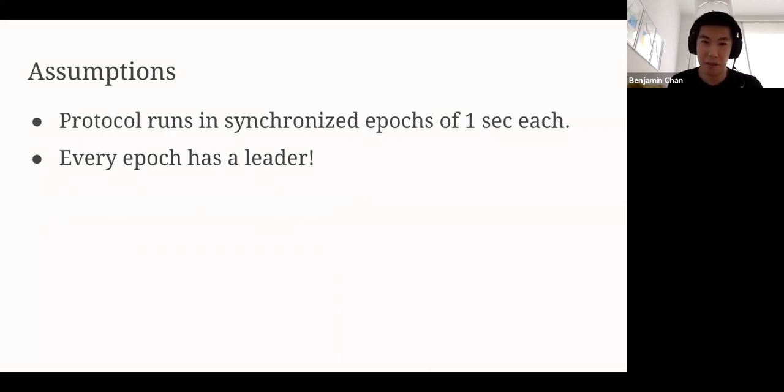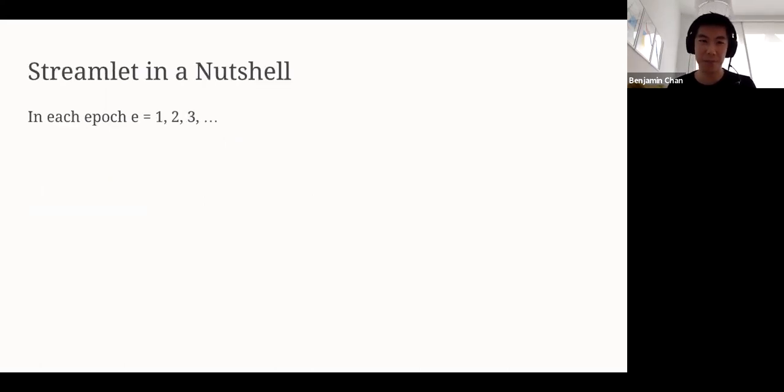All right. Before we start, we have two assumptions that we make that are really nice. They make the problem easier to reason about. Of course, we can relax them in practice. The first assumption is that the protocol is going to run in synchronized epochs of one second each. Every player is going to have a locally synchronized clock, and everyone is going to enter epoch one at the same time. Then one second later, everyone is going to enter epoch two at the same time, and epoch three, and so on and so forth. Our second assumption is that every epoch is going to have a leader who is publicly known. We'll see why this is useful.